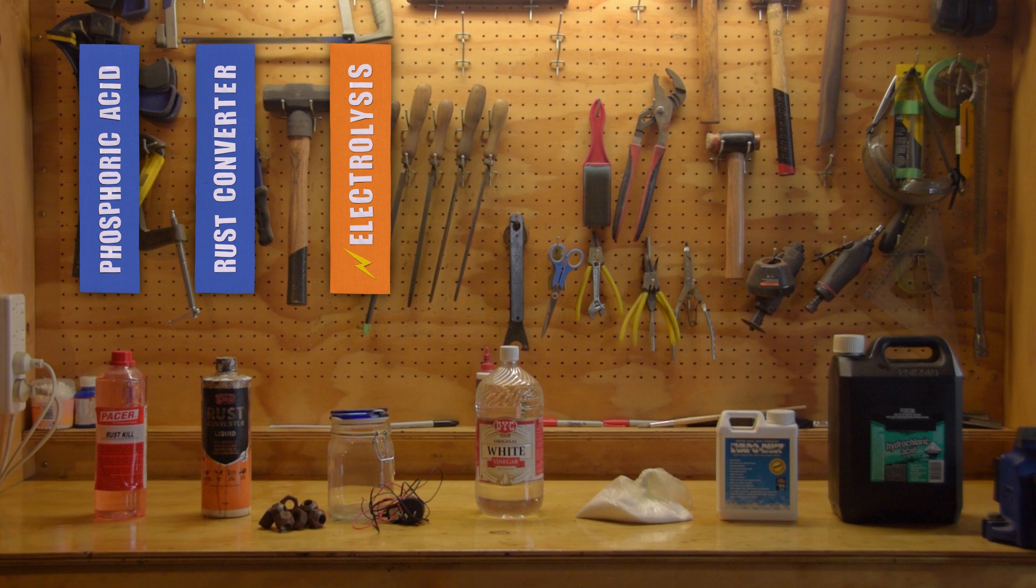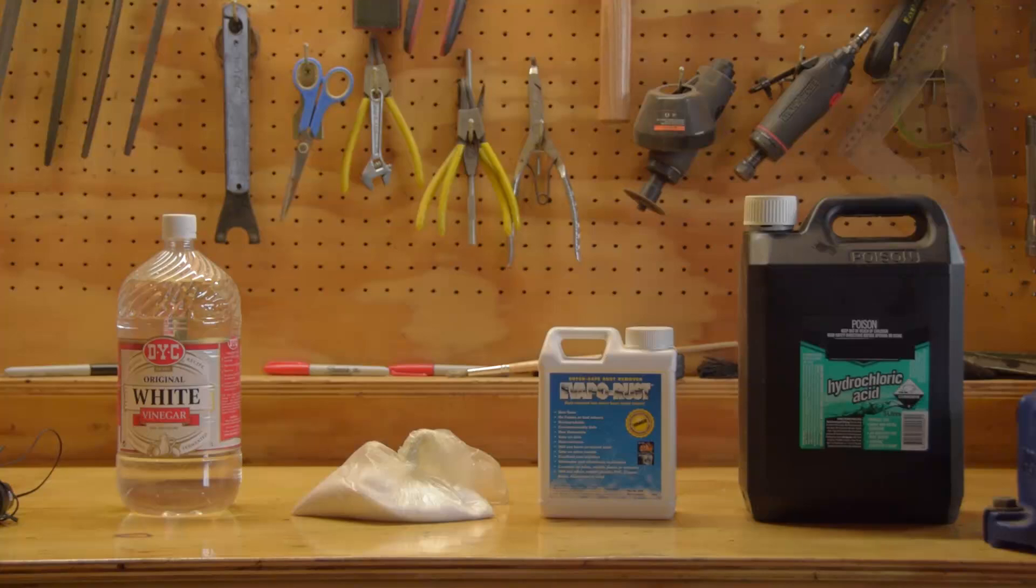Electrolysis. A bit of a pain to set up, but if you can deal with the hassle, electrolysis is the best cheap rust removal method. The best expensive rust removal method is evaporust.